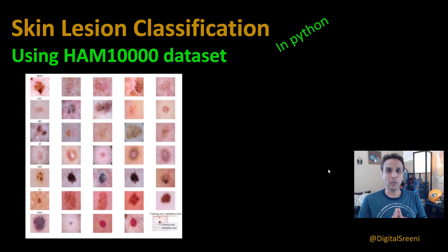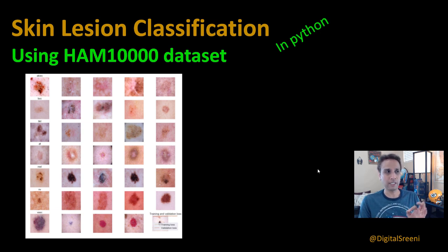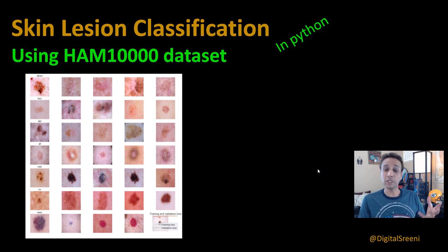Hey guys, this is Srini and welcome back to continue the discussion about the HAM 10,000 dataset that we started in the last tutorial. In the last tutorial we looked at how to load the dataset — a couple of ways — and we are going to use one of those methods to load the dataset and classify it. But just a quick reminder: what is the HAM 10,000 dataset? It's a great dataset to practice multi-class classification, whether you're doing deep learning or any other type of machine learning.